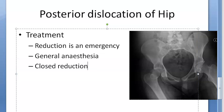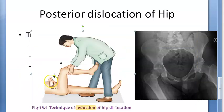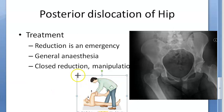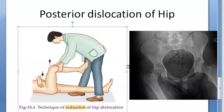Here is the technique of reduction of hip dislocation. You will hear the sound of reduction when it is successful. The patient is anesthetized and placed supine on the floor. An assistant grasps the pelvis firmly — you can see the assistant's hands stabilizing the pelvis — while the surgeon flexes the hip.